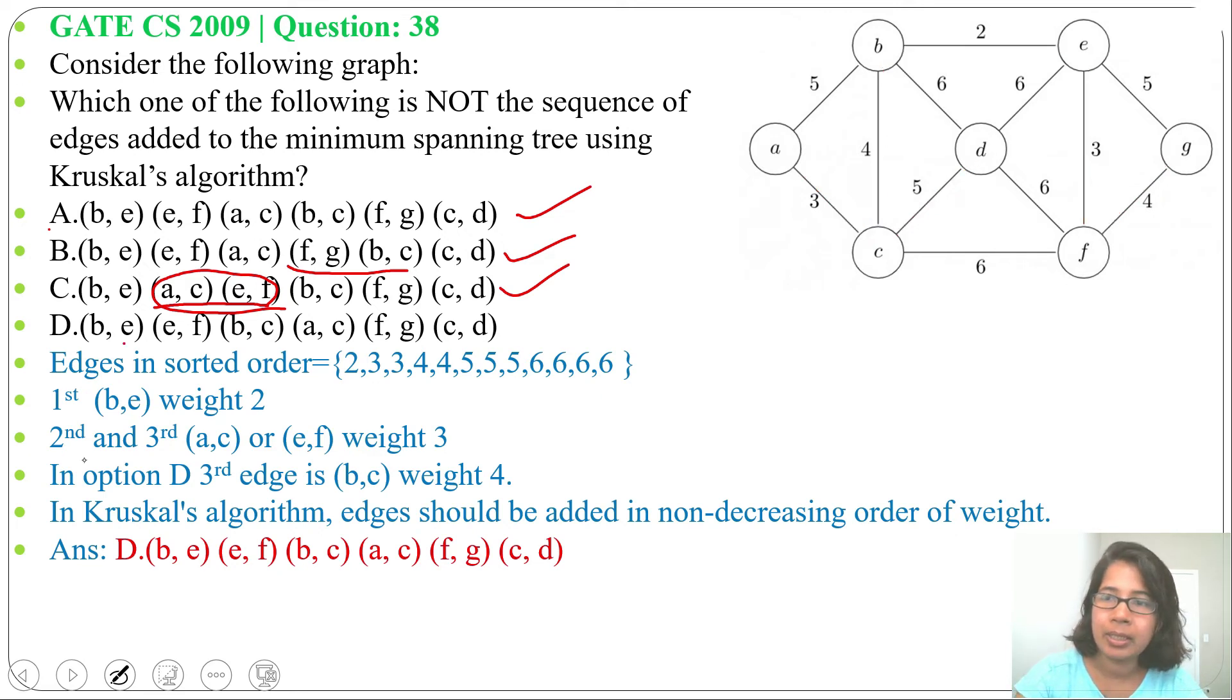Next option D: BE, EF weight is 3, next BC weight is 4, next AC weight is 3. So due to this, after 4 we cannot select 3, and if there is an edge having weight 3, we cannot choose 4. So before AC we cannot choose BC. That's why it is wrong.